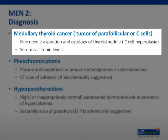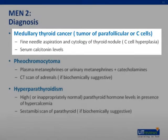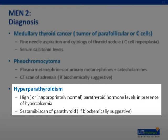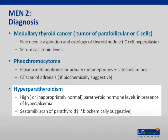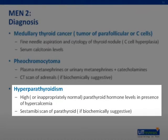Serum calcitonin levels are raised and can aid in the diagnosis of MTC. For pheochromocytomas, clinical symptoms are often telling, and elevated plasma or urinary measurements of metanephrines and catecholamines are diagnostic. In hyperparathyroidism, biochemical findings of hypercalcemia and high parathyroid hormone levels are diagnostic.